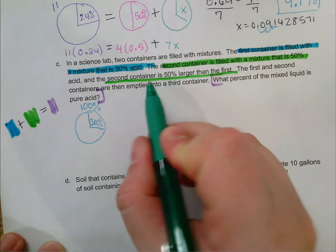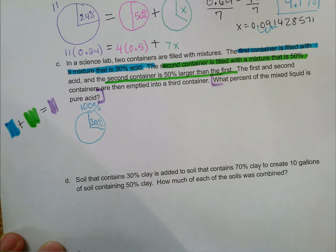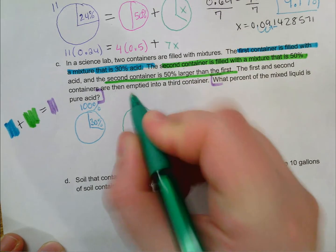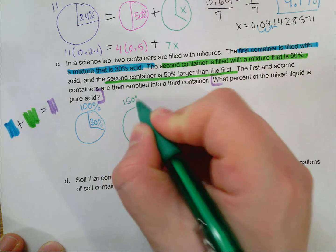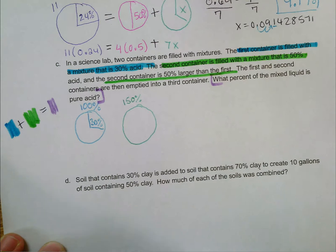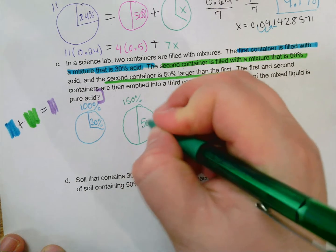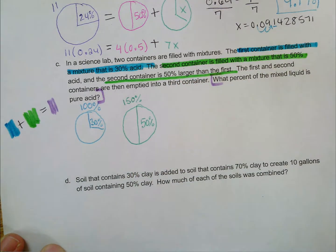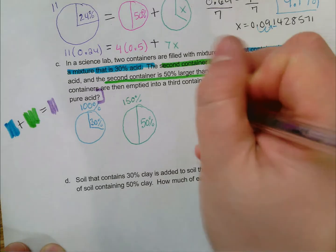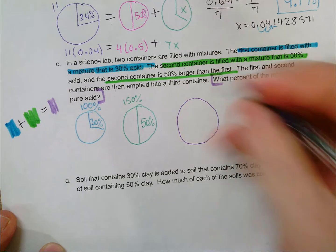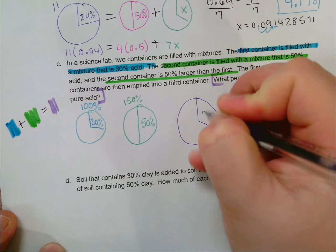My second container is 50% larger than the first. So I can think of it as 150% because I'm using my first as my basis. My first is the whole that I'm talking about. So my second container is 150% of the first since it's 50% larger, and it is half acid. When I add those together, I get some other container, and I don't know how much acid it is, and that's what I'm trying to figure out.